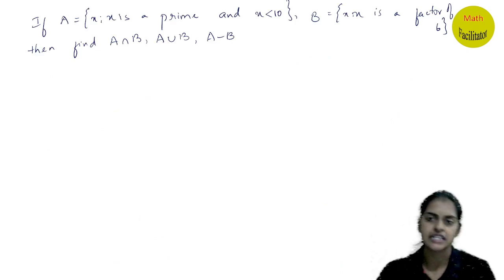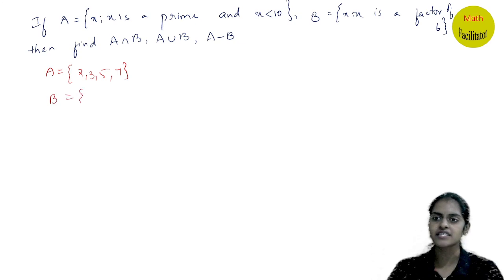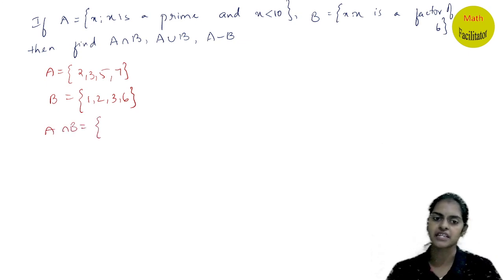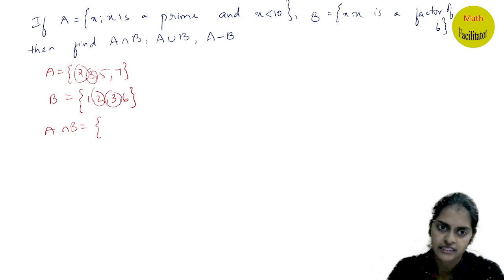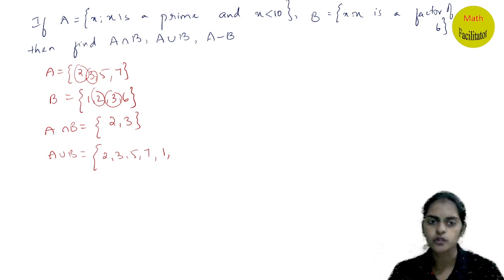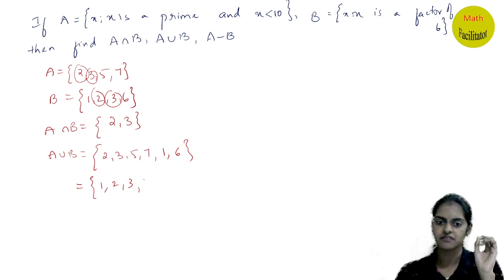Next question: A is a set where x is a prime number less than 10, so A = {2, 3, 5, 7}. B is a set of factors of 6, so B = {1, 2, 3, 6}. A intersection B — common elements — 2 and 3, so A ∩ B = {2, 3}. A union B contains all elements: {2, 3, 5, 7} union {1, 2, 3, 6} = {1, 2, 3, 5, 6, 7}. Note that elements in a set cannot be repeated.